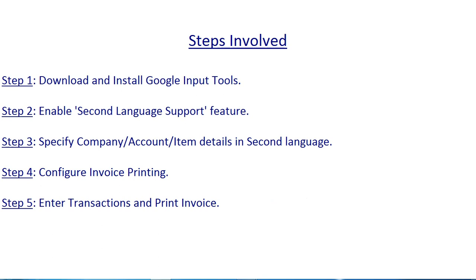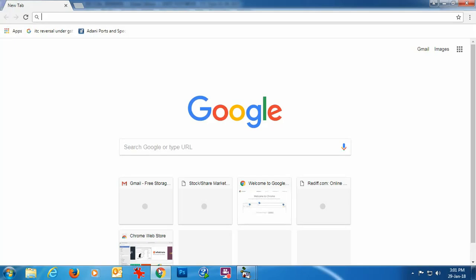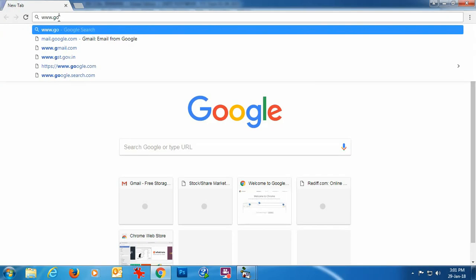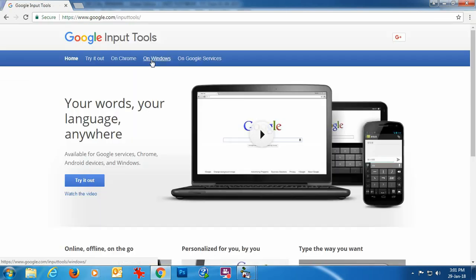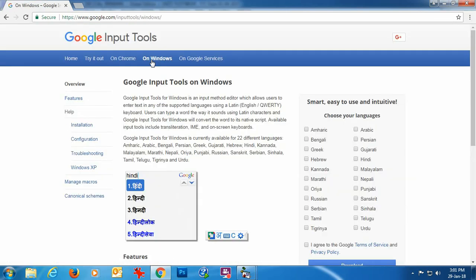To implement this feature you need to perform the following steps: First, download and install Google Input Tool. Then enable the second language support feature in Busy. Specify company, account, and item details in second language. Configure invoice printing. Enter transactions in English language and print the invoice in the language of your choice.